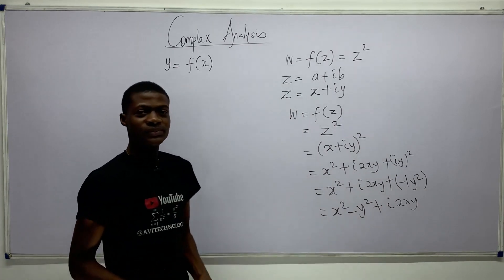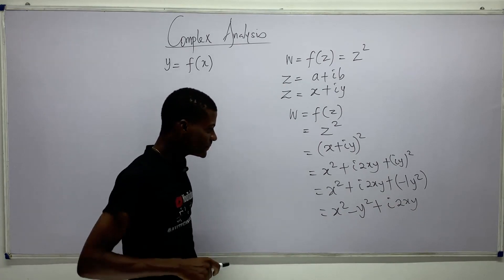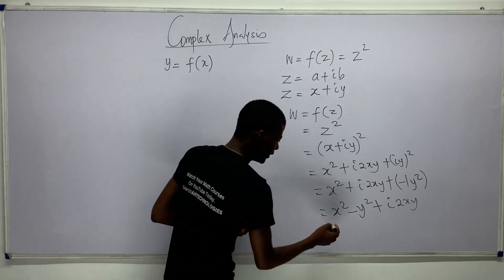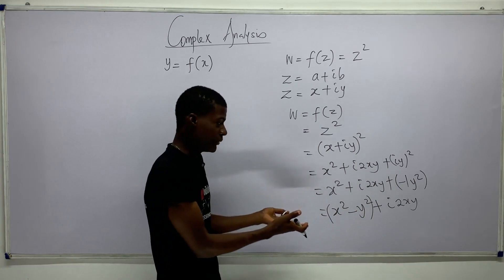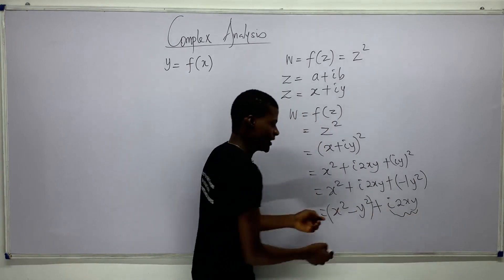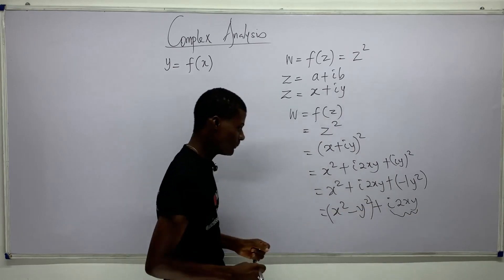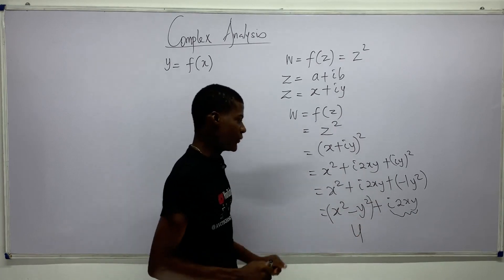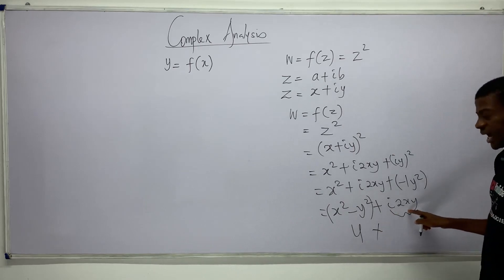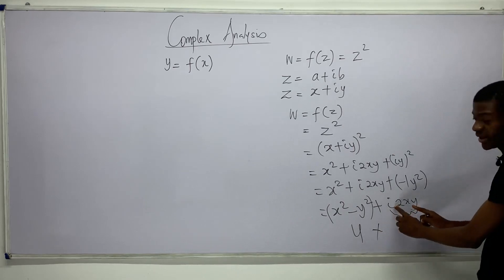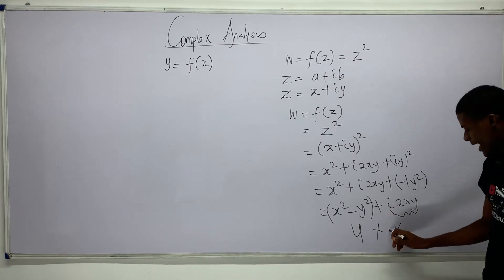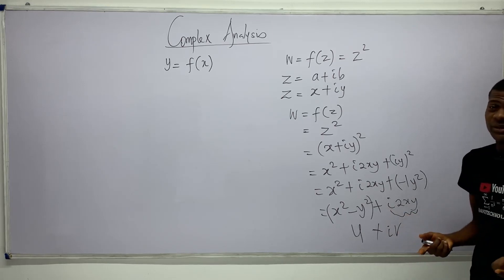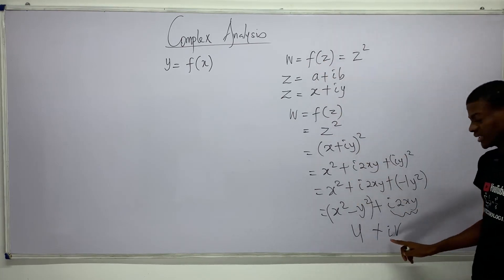Now look at this result — we still have a real part and an imaginary part. Everything in x squared minus y squared is real, and the term with i is imaginary. So we can label the real part as u, and since 2xy is also real we write the imaginary part as iv, giving us f(z) equals u plus iv.